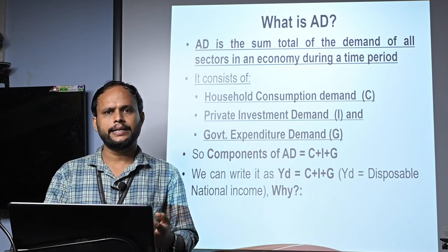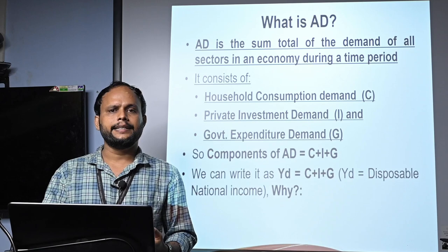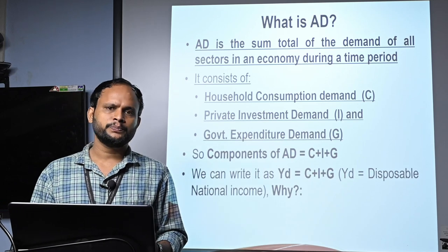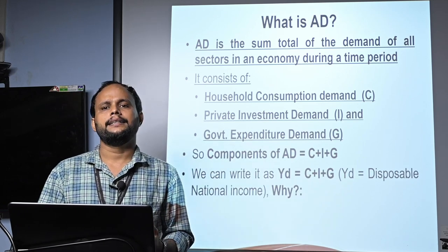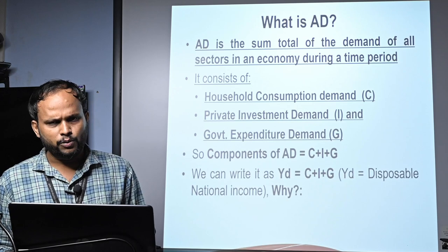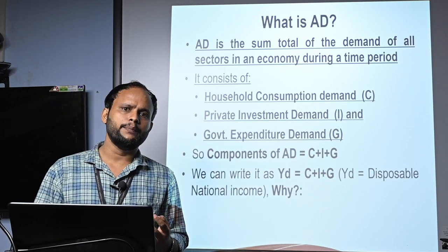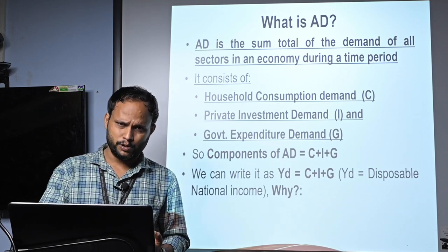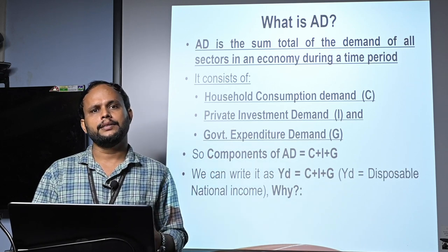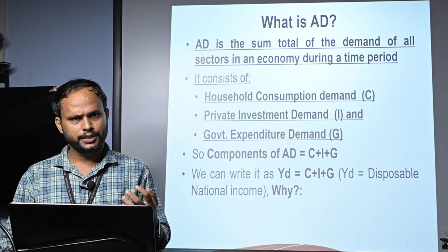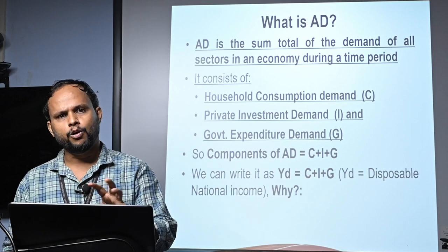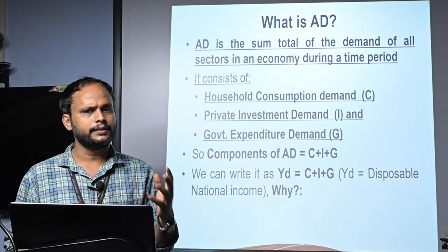We can also write this as YD = C + I + G, where YD is disposable national income, or simply national income. So national income equals C + I + G. This is because all output produced in an economy during a period will be consumed either by the household sector, by the private sector for investment, or by the government sector — and so aggregate demand can be written as national income.